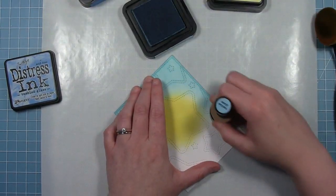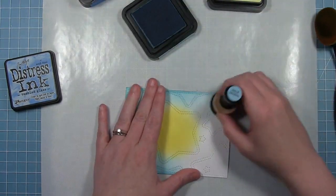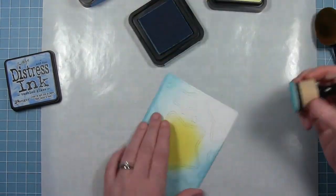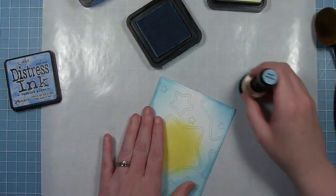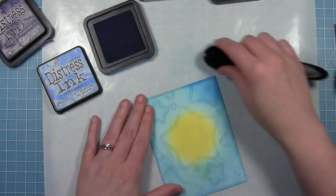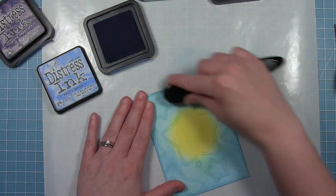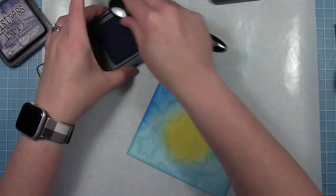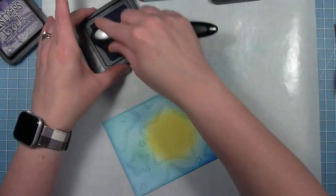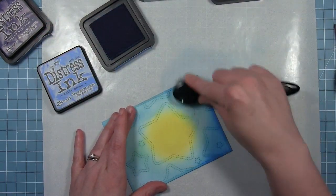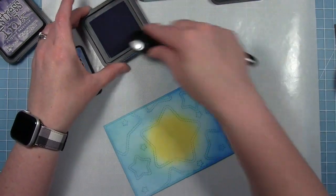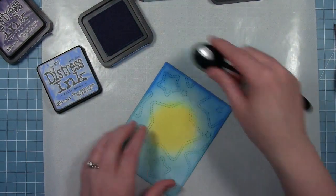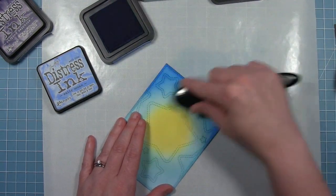You can see how that ink sort of catches in those details that the die cut created and makes them stand out even more. Now that I've got a layer of that tumbled glass on the whole background coming up to that glow, I'm going to go around the outside edges with some salty ocean using my blending brush to just darken that up. So I'm going from the glowing star in the middle out towards a darker background. That is the look I'm going for.